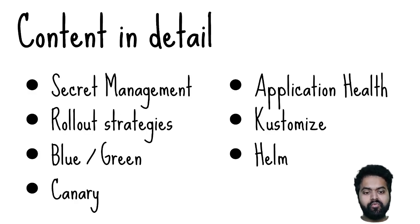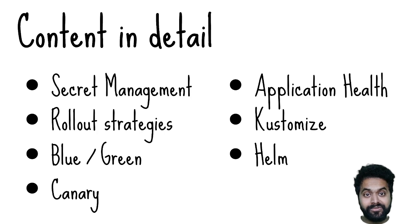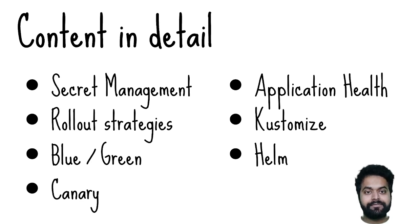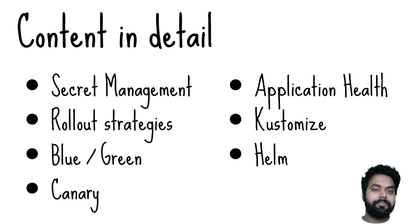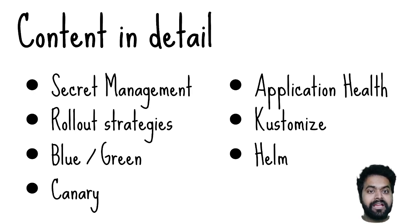Going into more detail, the course covers how secret management works in terms of GitOps, because when we talk about GitOps, literally everything is in code — what's deployed on production, the same configuration is in Git history. But what about secrets? It's not safe to store secrets directly, but there are ways to do it. One way I've covered in my GitOps playlist using the Sealed Secrets controller. The course also covers various rollout strategies — for example, blue-green deployments and canary deployments — and how they work, along with examples.